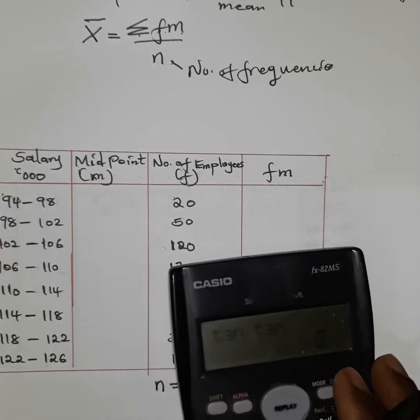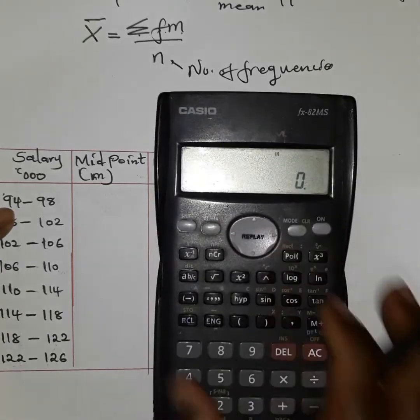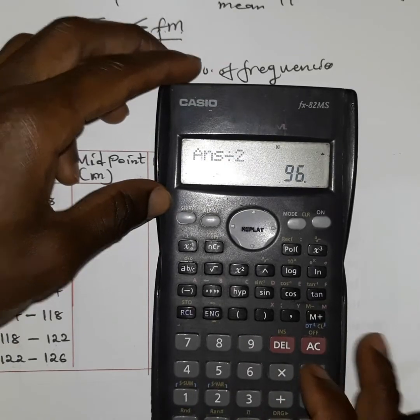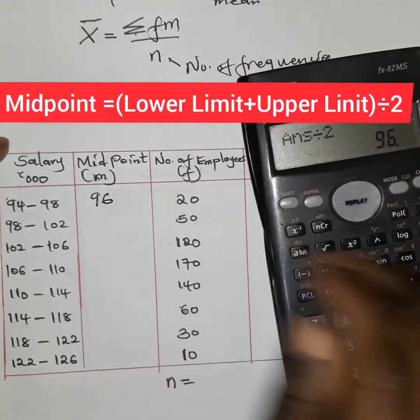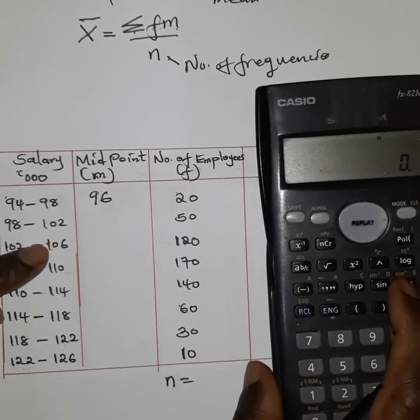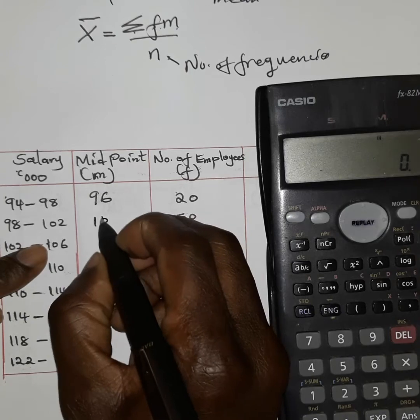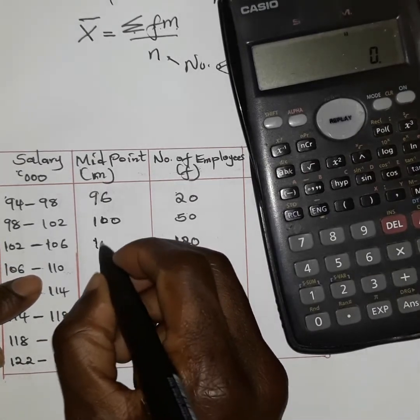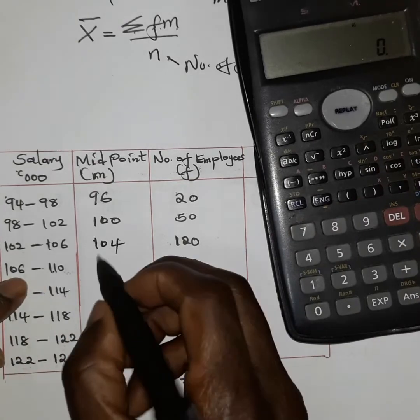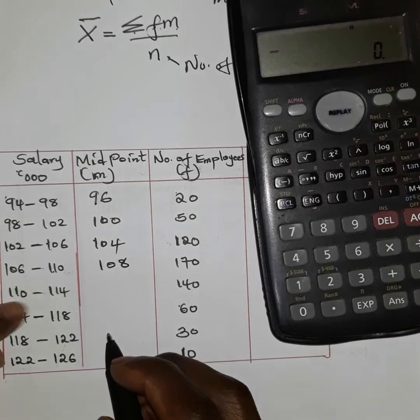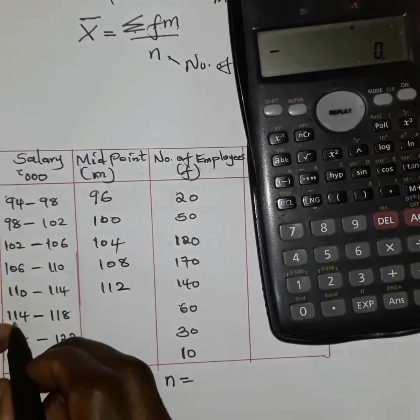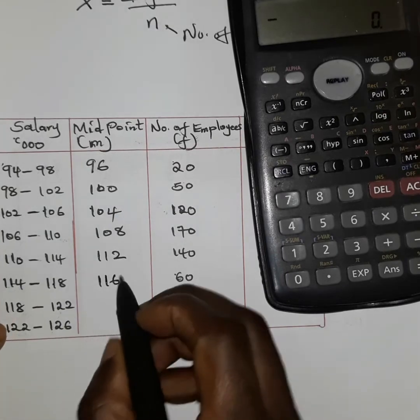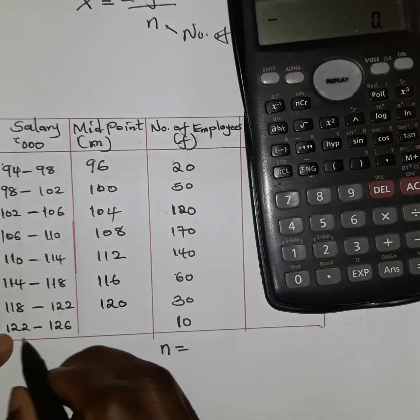Let us first of all start by getting the middle values. 94 plus 98 divided by 2 to get the middle, which is 96. 98 plus 102 divided by 2 should be 100. 102 plus 106 divided by 2 should be 104. 106 plus 110 divided by 2 should be 108. 110 plus 114 divided by 2 is 112. 114 plus 118 divided by 2 should be 116. 118 plus 122 divided by 2 should be 120. And finally, 122 plus 126 divided by 2 is supposed to be 124.